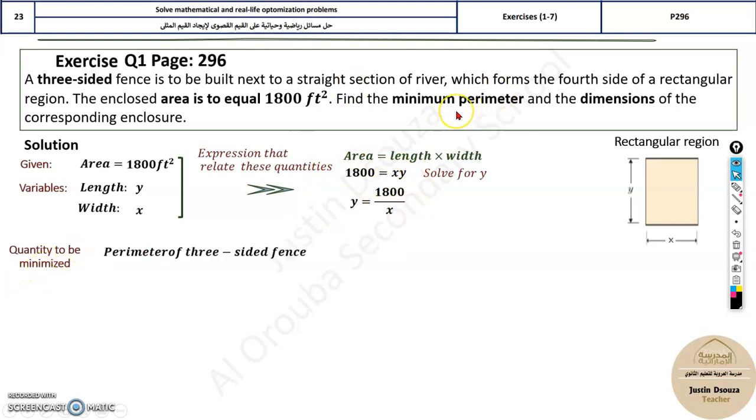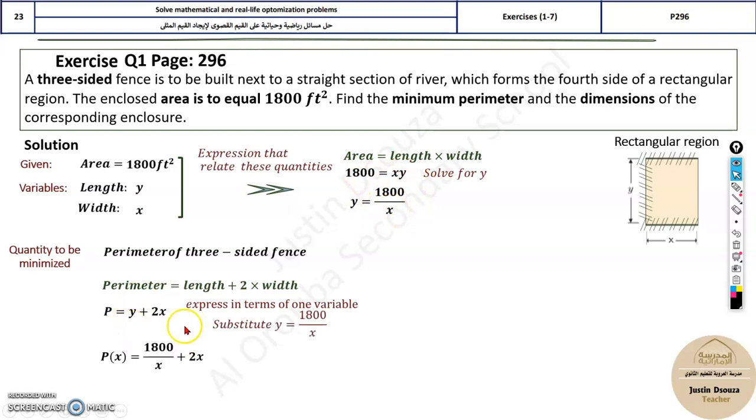Now, which is the quantity that needs to be optimized? In this case, it's minimum, so it's minimized. That is, perimeter. That is only three-sided. Now let's see, it will be y plus 2x plus x, that is, y plus 2 times width. So that is, p is equal to y plus 2x. Now we know over here, y was written in terms of x, right? Substitute everything like that.